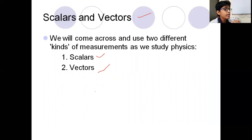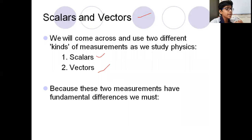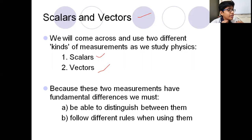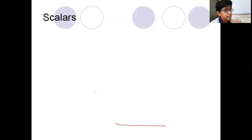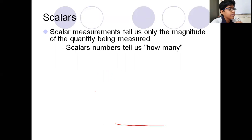Scalars and vectors are very important quantities which everyone should know about. We will come across and use two different kinds of measurements as we study in physics, the scalars and the vectors. Because these two measurements have fundamental differences, we must be able to distinguish between them and follow different rules while using them. Scalar measurements tell us only the magnitude of the quantity that is being measured. Scalar quantities are the quantities which have only magnitude and we don't define direction to them.